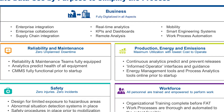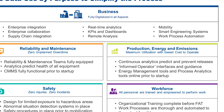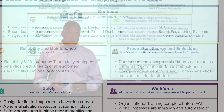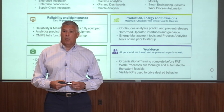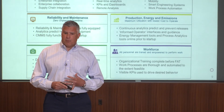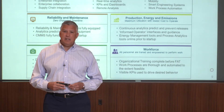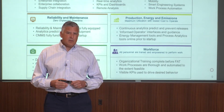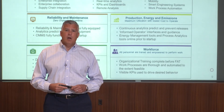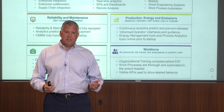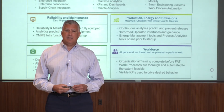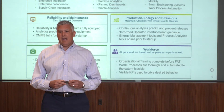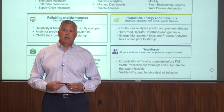The third area is production — how do we optimize production, make operators more efficient, and make the plant more efficient? There are a lot of technology advances today that you can incorporate. The fourth area is safety, which is the obvious one. And lastly, we talk about the workforce and trends around mobile workers and digitalization, so workers can access data in the field rather than going back and forth between the field and the office.